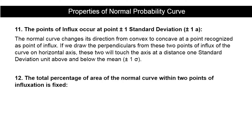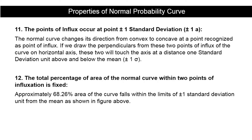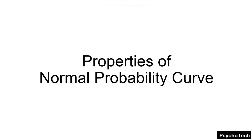The twelfth property is that the total percentage of area within the two points of influx is fixed. Approximately 68.26% of the area of the curve falls within the limits of plus and minus one standard deviation from the mean. So these are the 12 properties of the normal probability curve. You should always refer to a curve when reading the properties, as having a curve in front of you makes it much easier to understand each property.